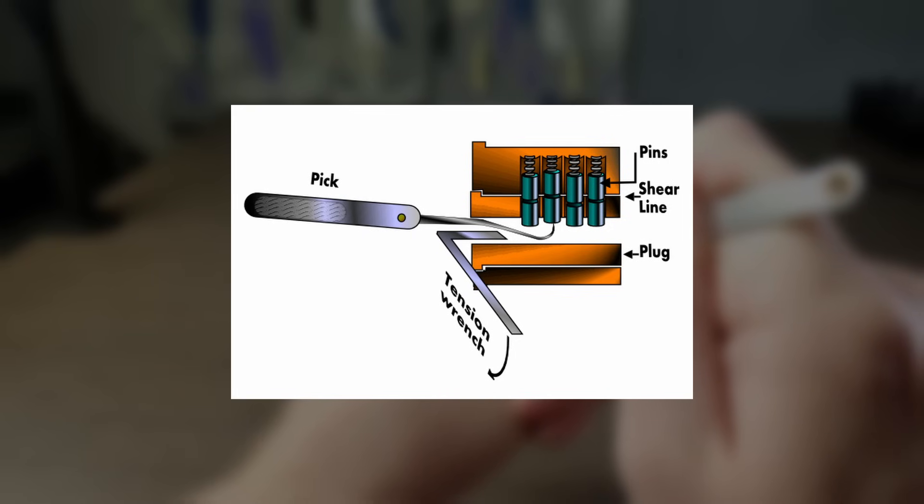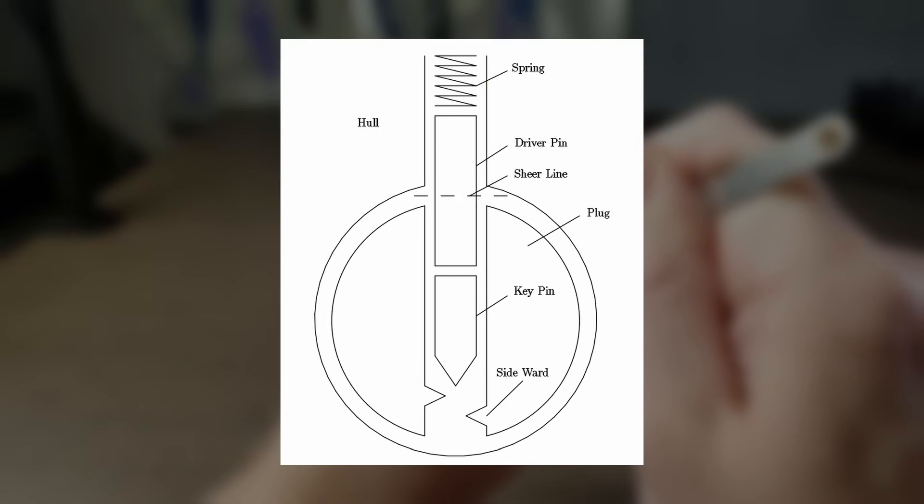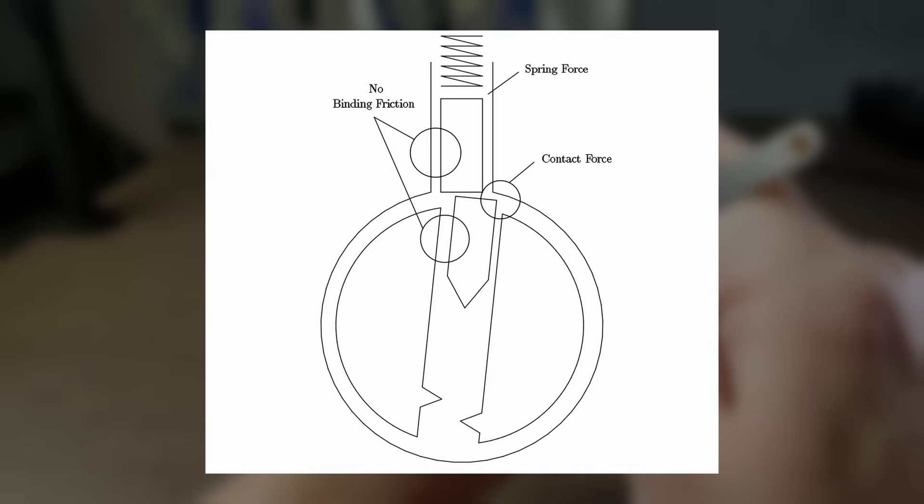But nobody really focuses on the other half of the equation, which is tension. To set any pin, you have to provide a precise amount of tension. In other words, you have to try to rotate the lock like you would when turning a key in order to set any pin.